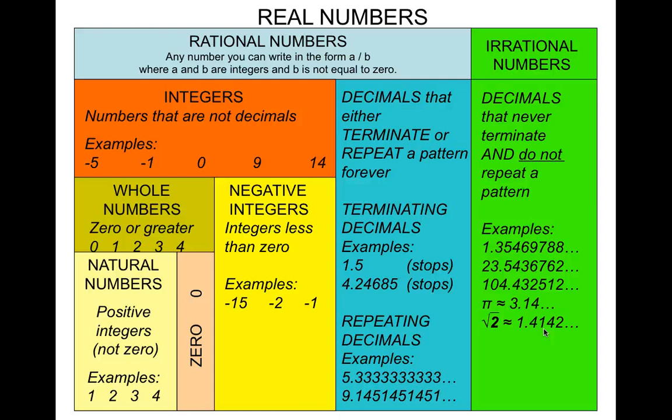But not all square roots are irrational. For example, the square root of 9 is 3, and 3 is an integer. So you have to be careful with square roots — some are irrational, and some are not.